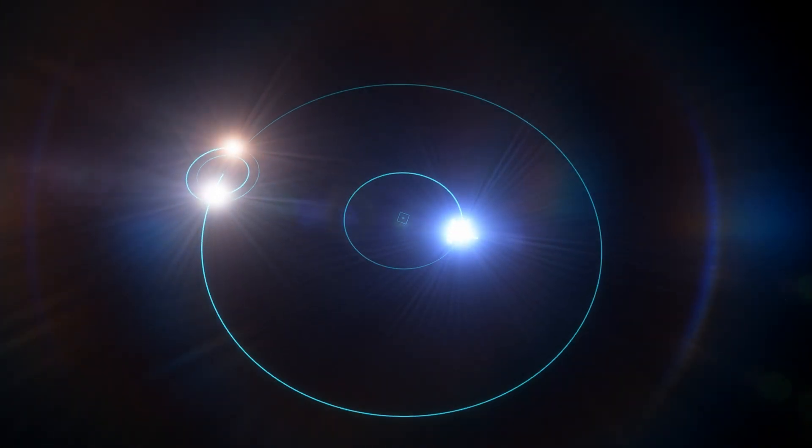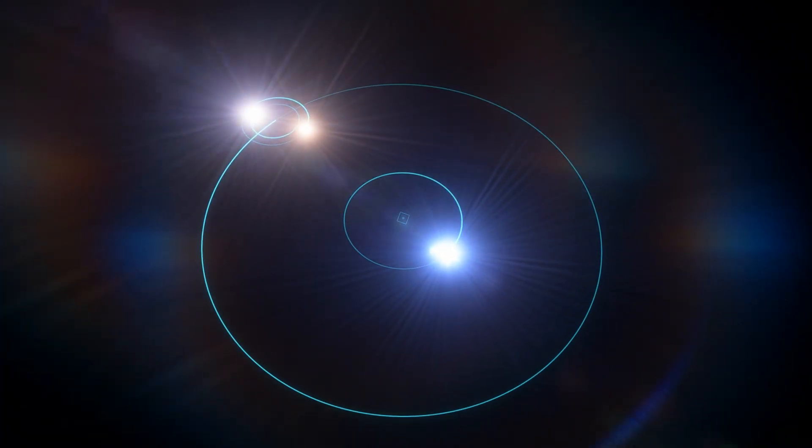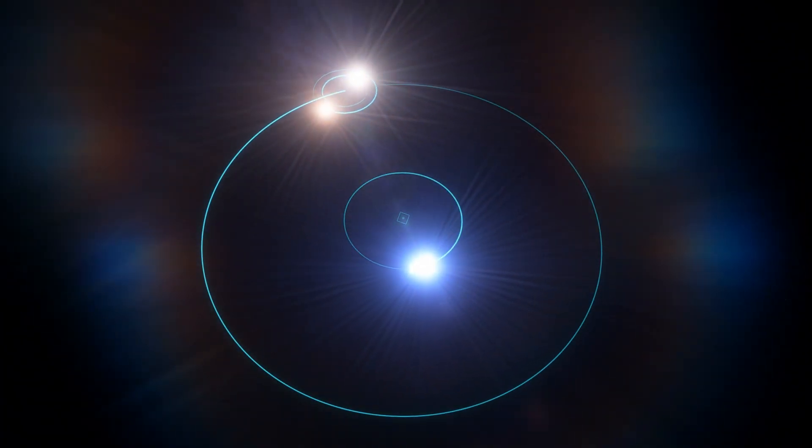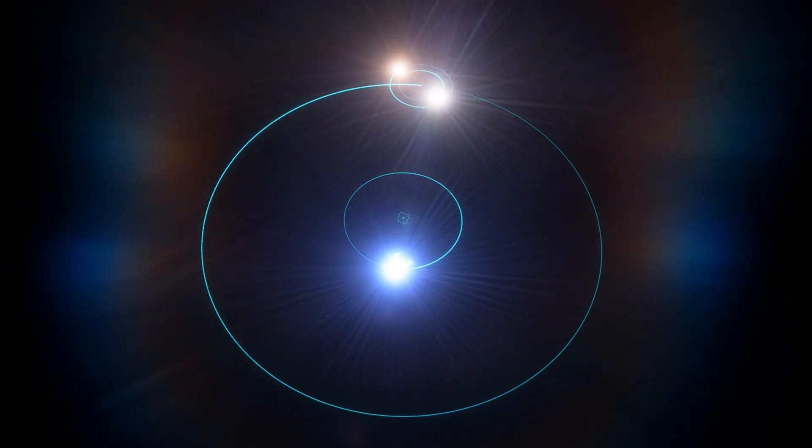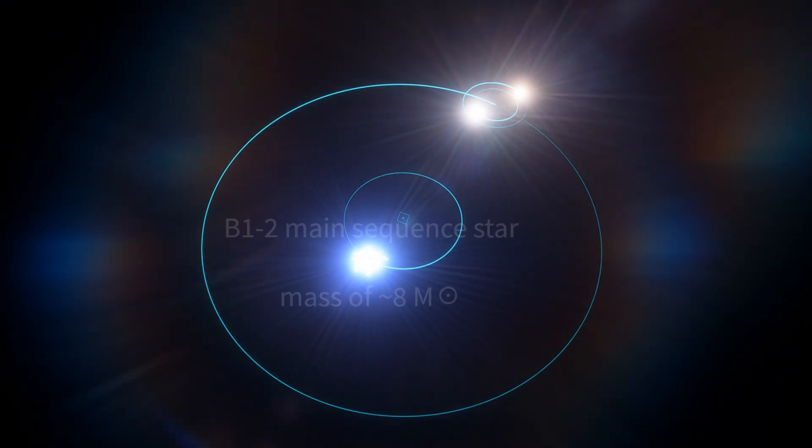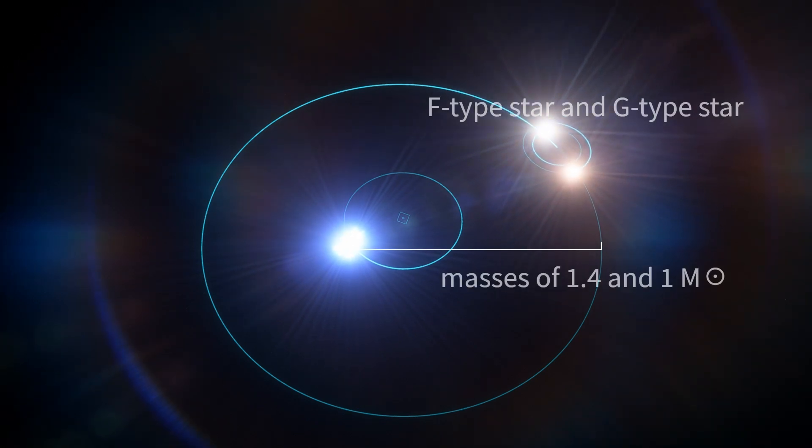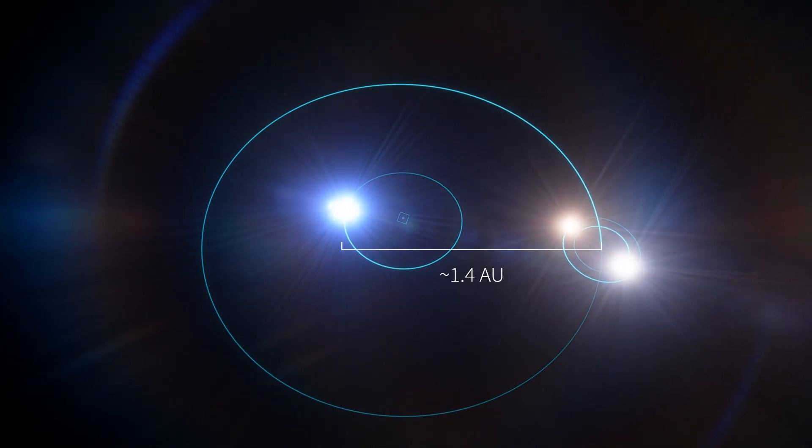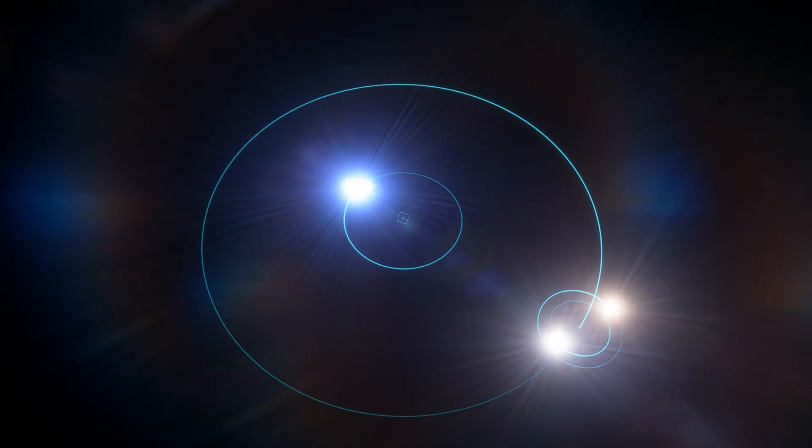Many eons ago, the PSR J0337-1715 system forms as a triple system, consisting of an 8 solar mass B-type star, orbited by a pair of smaller, more sun-like main sequence stars, themselves in a relatively wide orbit around each other.